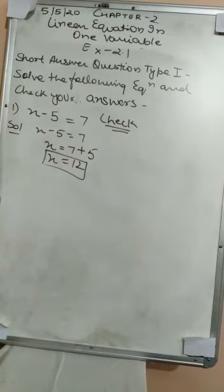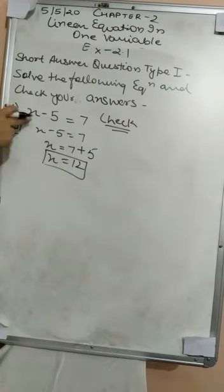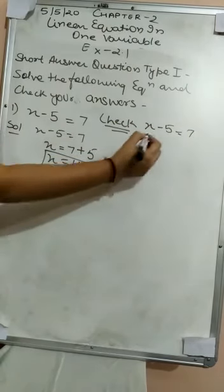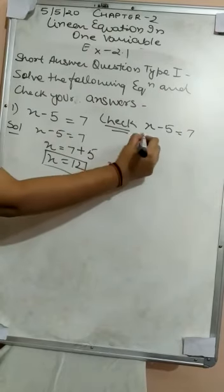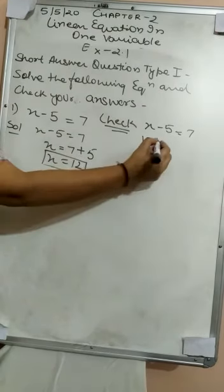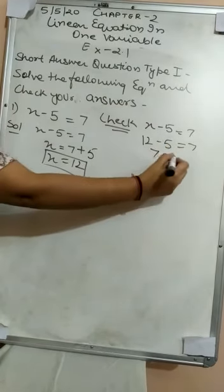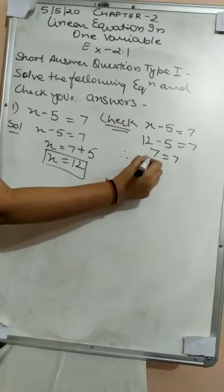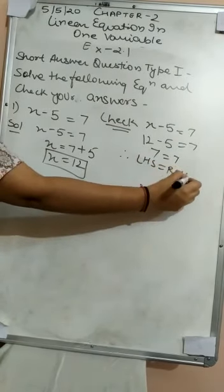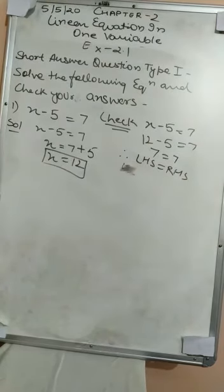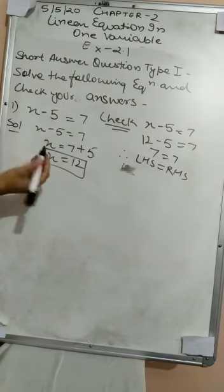Now we check. Whatever value we got for the variable, we substitute it back into the equation. The equation is x minus 5 equals to 7. The value of x is 12, so we keep 12 in place of x: 12 minus 5 equals to 7. Now 12 minus 5 is 7, so 7 equals to 7. Therefore LHS equals to RHS. We confirm the value of x equals to 12 is correct.